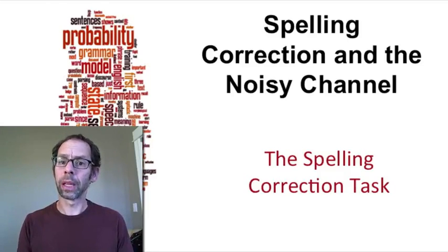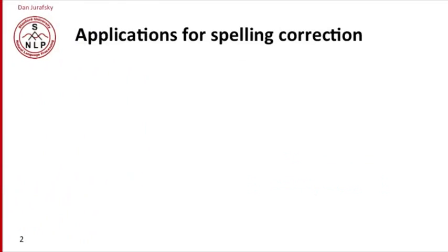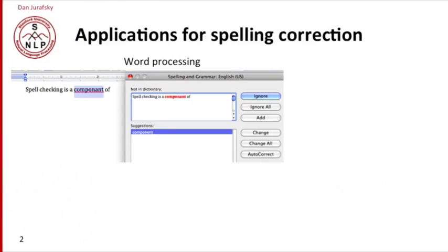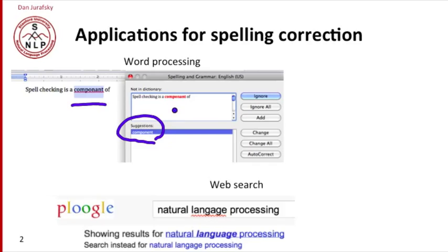Today we're going to talk about spelling correction. Lots of applications make use of spelling correction. For example, word processing — almost any modern word processor will take a misspelled word like 'component' with an A and give you suggestions like 'component' with an E, and automatically replace it for you.